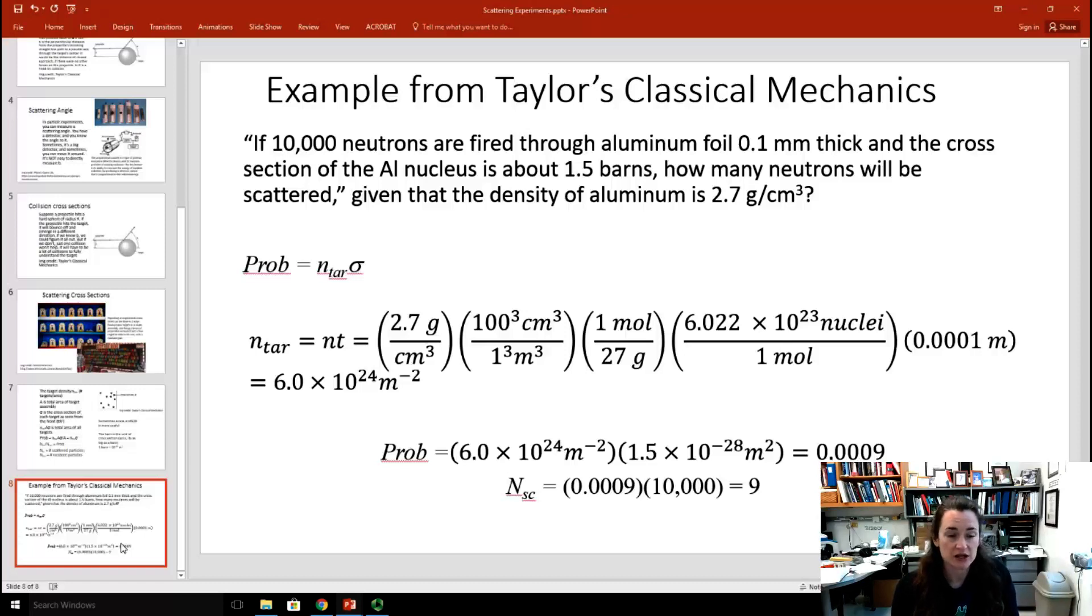We'll first find the number of aluminum nuclei per unit volume. To do that, we're going to use the density of the aluminum. The density of the aluminum is 2.7 grams per cubic centimeter. We're going to convert from cubic centimeter to cubic meter by multiplying by 100 cubed. And then we're going to use the atomic weight of aluminum, which is about 27 grams per mole. We're going to use that to convert from grams to moles. And then we're going to use Avogadro's number, 6.022 times 10 to the 23rd, to convert from moles to atoms, or nuclei.